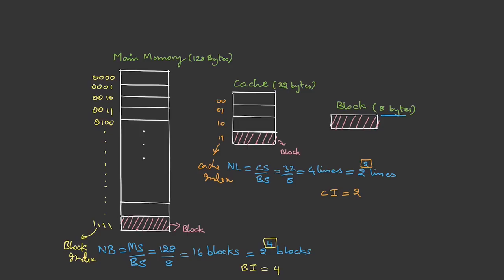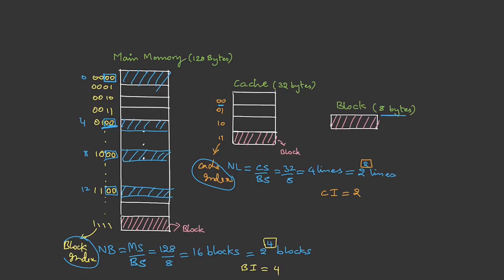In direct mapping, the logic is that the least significant bits of the block index are matched with the cache index. Here the cache index is 2 bits, so wherever the least significant 2 bits are 00 in the block index, we mark those blocks. Those positions are block 0, block 4, block 8, and block 12. These blocks, having the least significant bits the same as the cache index, can be placed in line 0.